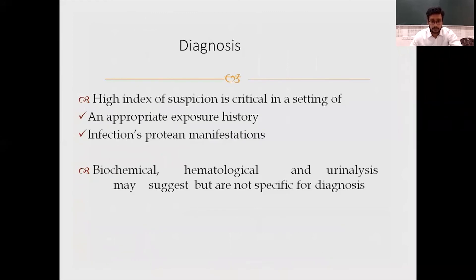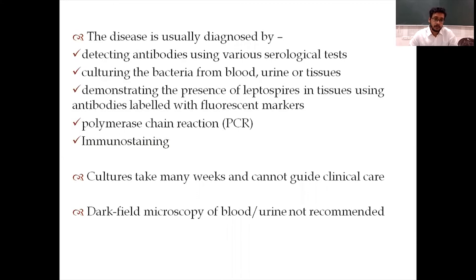Diagnosis: a high index of suspicion is critical in the setting of an appropriate exposure history. A thorough history must be taken — whether the patient has traveled anywhere, swims daily in open water sources, has pets or rodents at home, and whether the surroundings are clean. Routine biochemical, hematological, and urine analysis may suggest but is not specific for leptospirosis. The disease is usually diagnosed by detecting antibodies using serological tests, culturing bacteria from blood, urine, and tissues, or demonstrating leptospira in tissues using fluorescently labeled antibodies or PCR immunostaining. Cultures take many weeks and cannot guide clinical care; direct microscopy of blood and urine is not recommended.